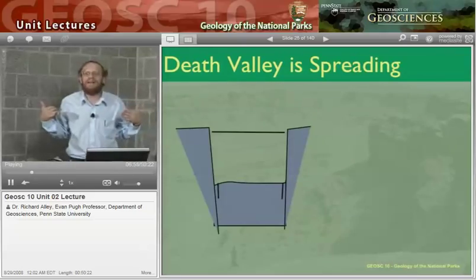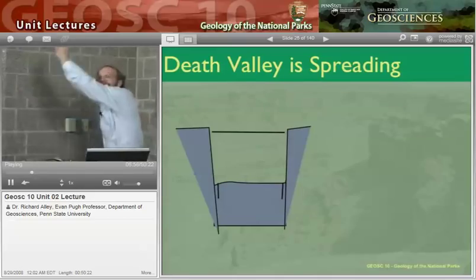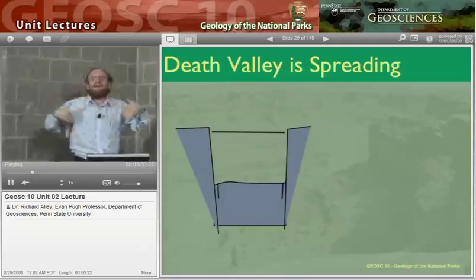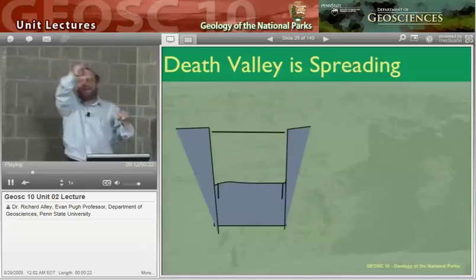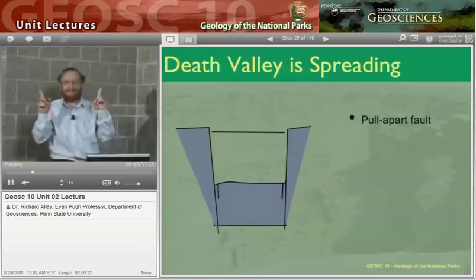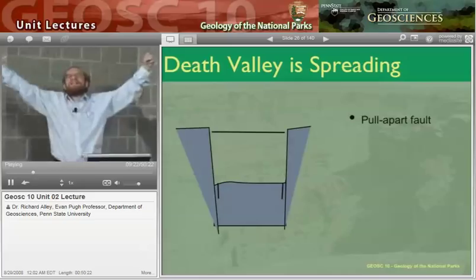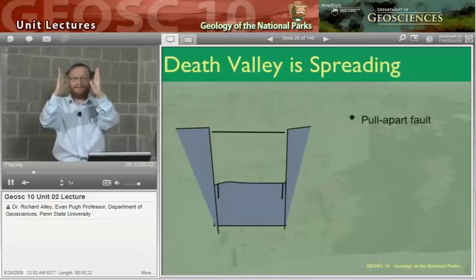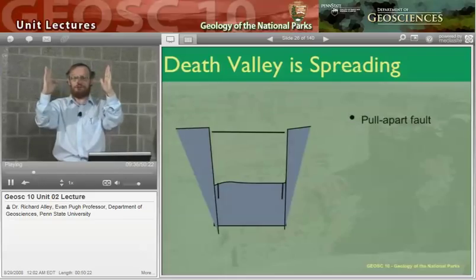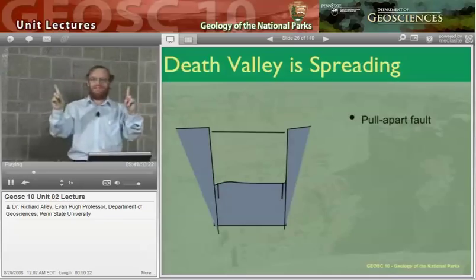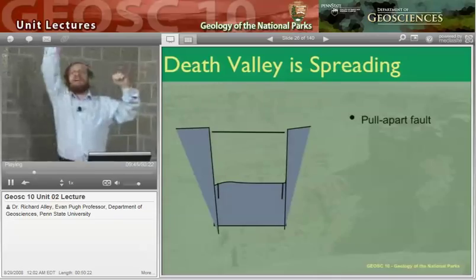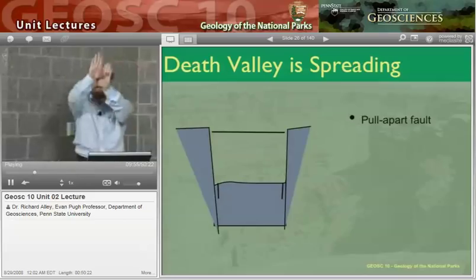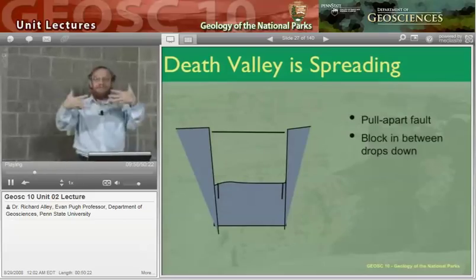This is a cross section of Death Valley — if you could take a giant saw and hack your way down and look at it as a cliff. Death Valley has been measured: if you put GPS receivers across Death Valley and on across Nevada and over to Utah, what you find is that very slowly — about as rapidly as your fingernails grow — the west is getting wider. One side and the other side of the valley are very slowly pulling apart. As they do so, the valley drops down along what we call pull-apart faults, because you pull it apart and the fault allows the drop. The fault is a break where there's motion.